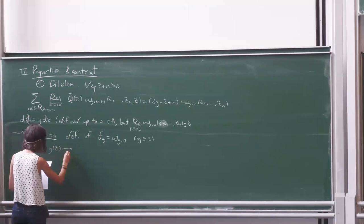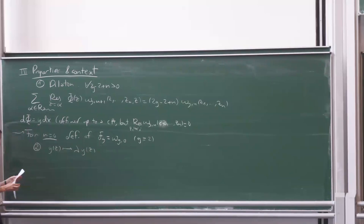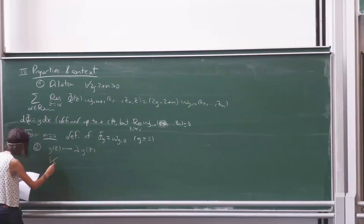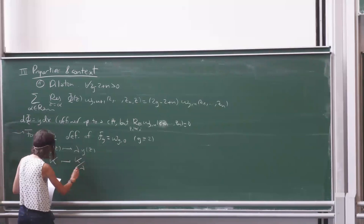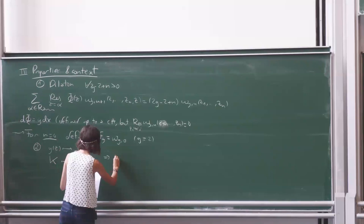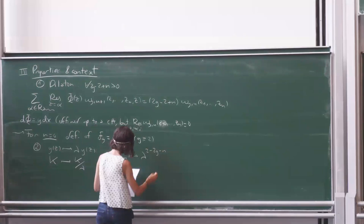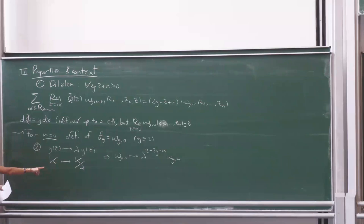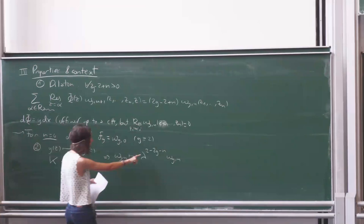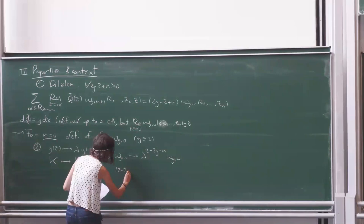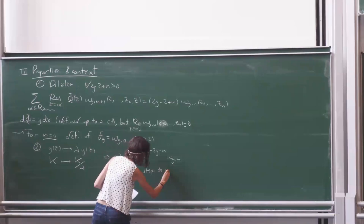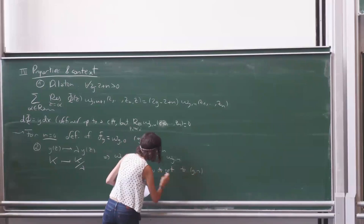Now homogeneity: if we change y to λy, the only thing from the topological recursion formalism that changes is the kernel, and it will simply be divided by λ. So the only thing we get is a factor of λ^{2−2g−n}. In the topological recursion formula we have the kernel appearing with a λ in the denominator, and we have this number of steps to arrive at that topology, so we get exactly this homogeneity.